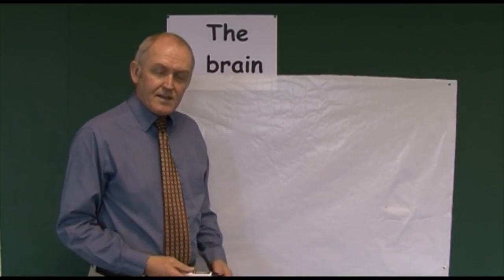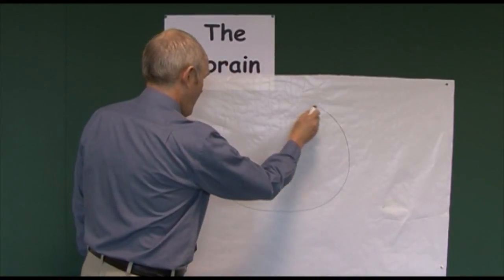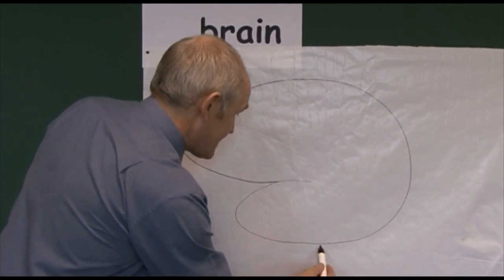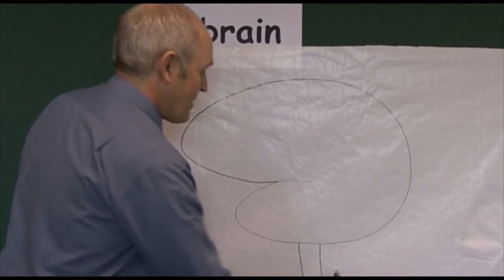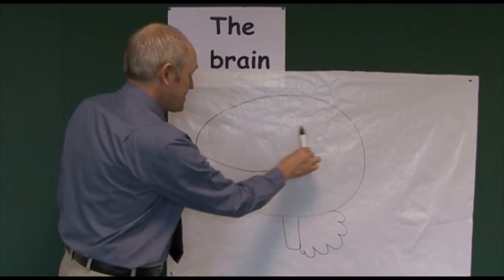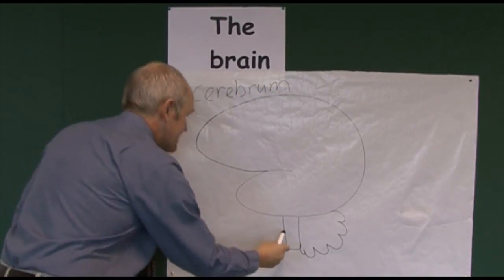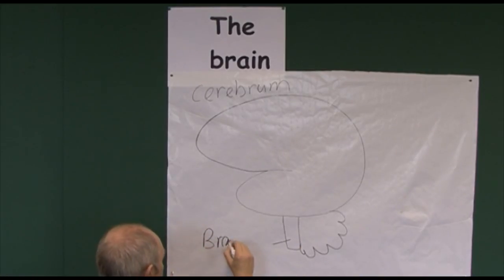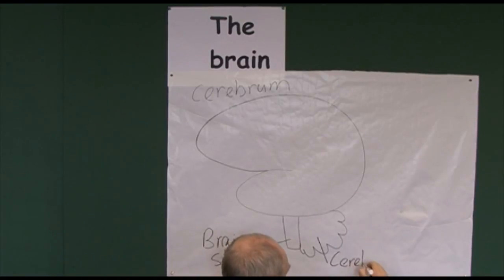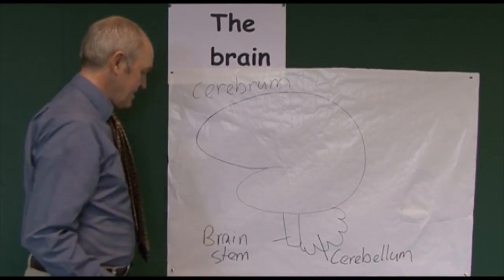Let's think about the overall structure of the brain. A good way to think about the brain is it's a bit like a boxing glove. Below the front we have the brain stem, and behind that we have the cerebellum. So what we've drawn here really is the three main areas of the brain: the cerebrum at the top, the brain stem below at the front, and the cerebellum at the back.